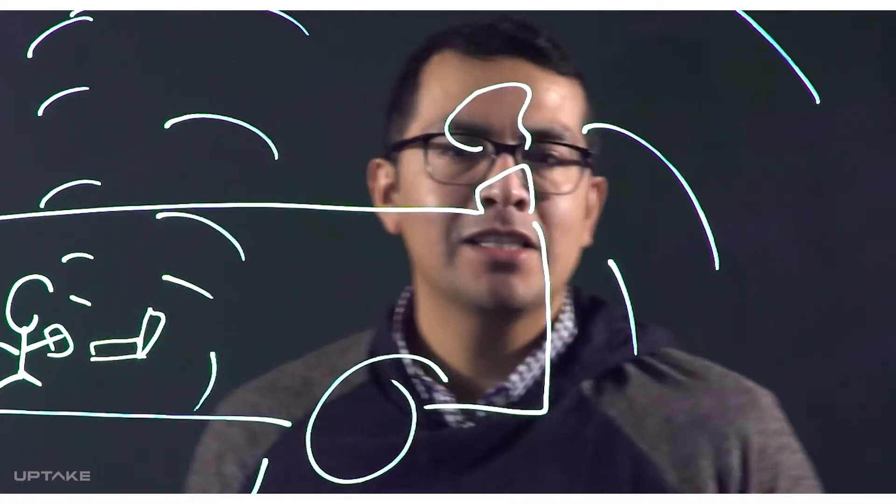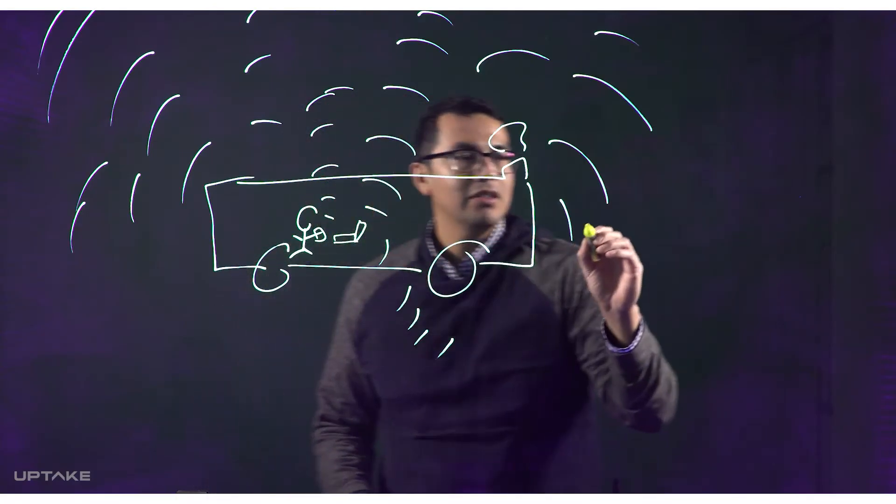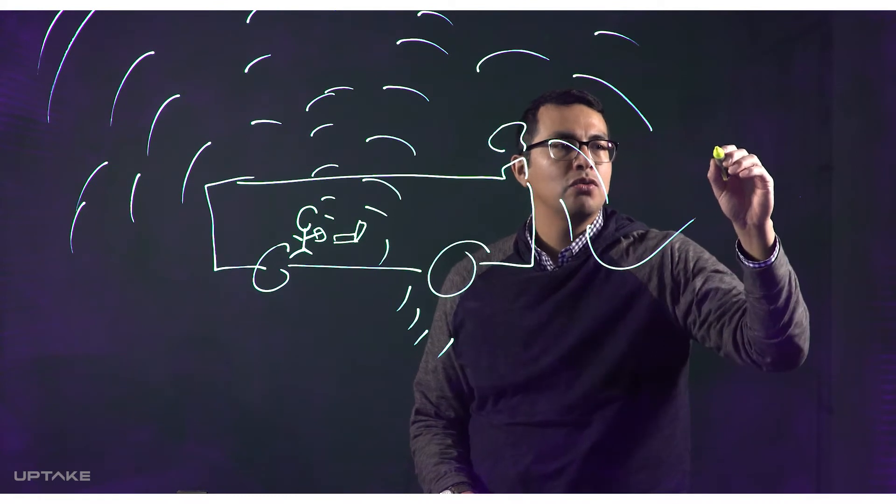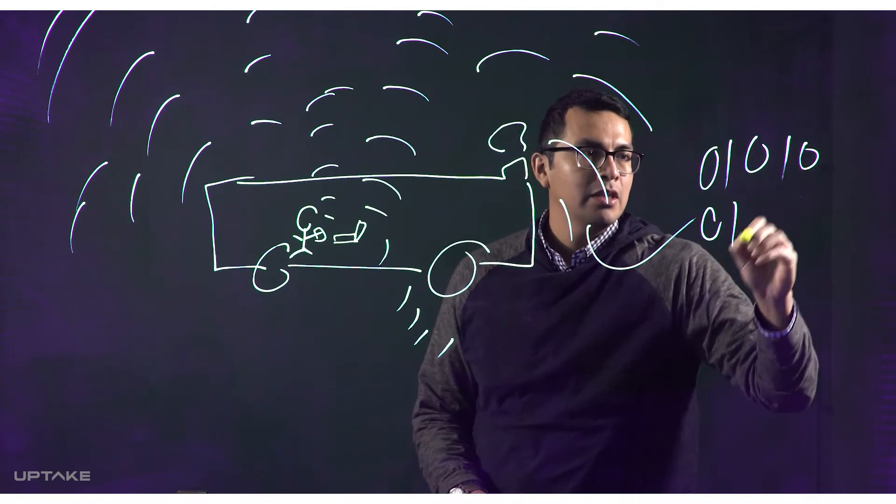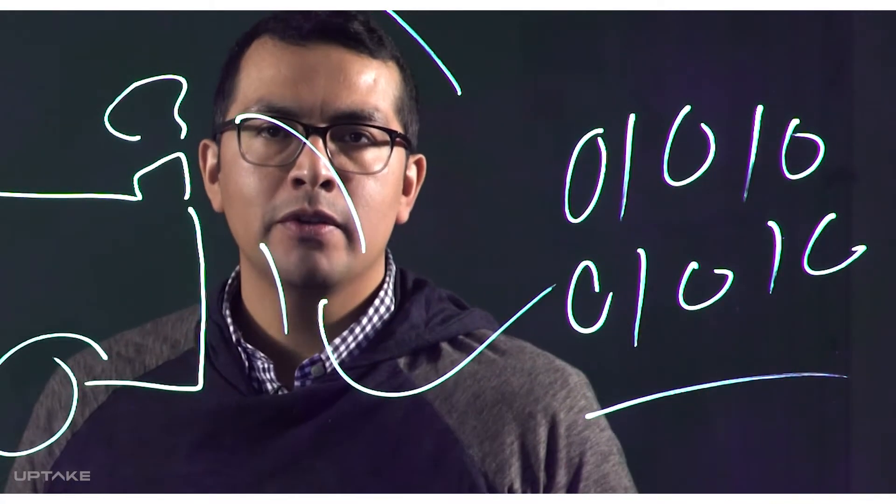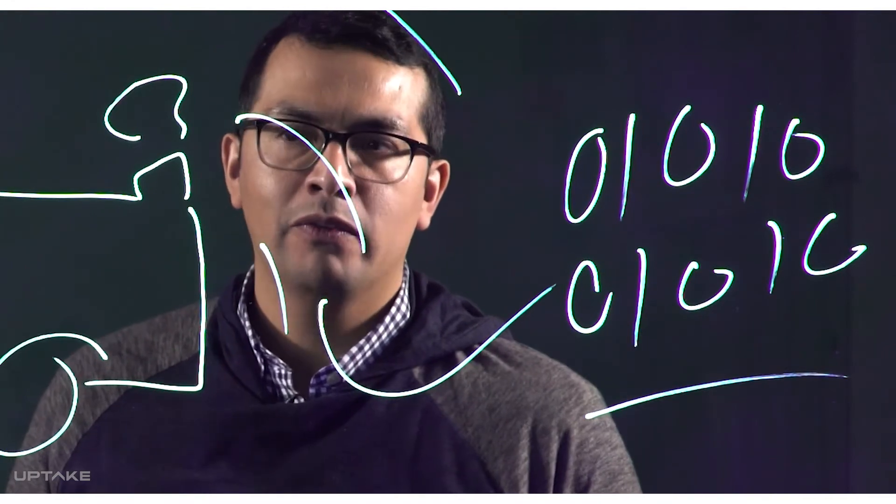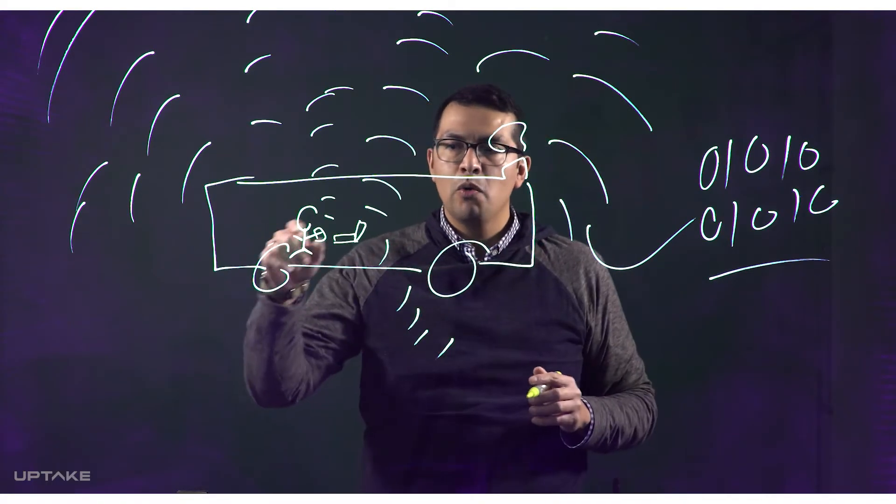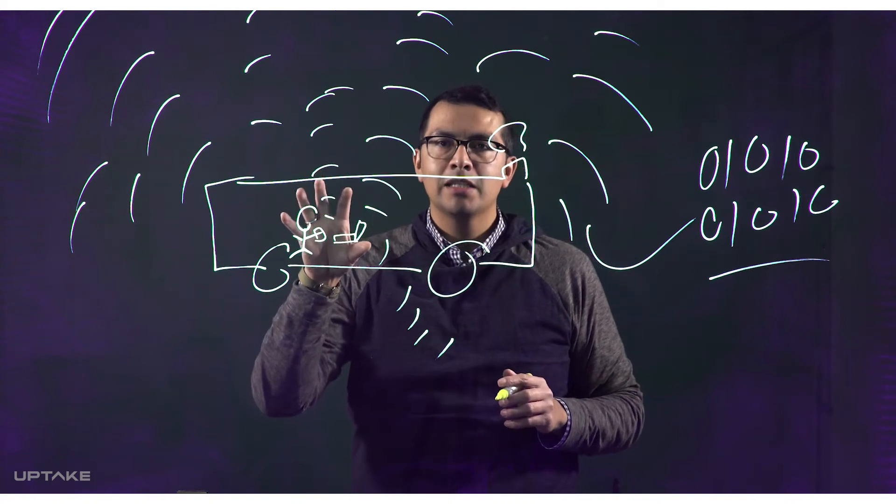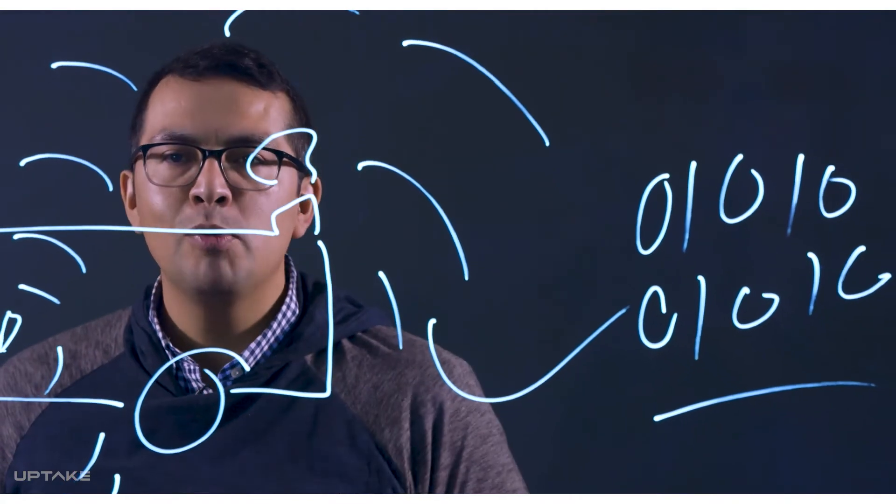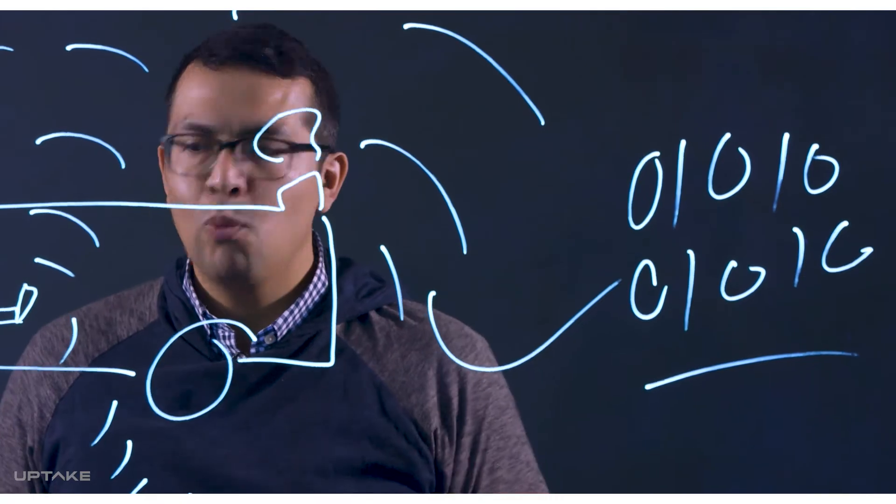But data in itself is not particularly useful. This all translates into a series of ones and zeros. It's difficult for humans to interpret this. It's difficult to figure out what's going on in here. What's the context here? Was this an enjoyable commute by just looking at ones and zeros?